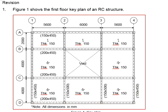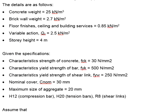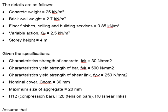Having understood the structural key plan, let us look into the details. The concrete weight is 25 kN per m³. The brick wall weight is 2.7 kN per m². The floor finishes, ceilings, and building services — which are the permanent actions — are 0.85 kN per m². Variable actions are 2.5 kN per m². The story height is 4 m. Be careful with the units given, as some are in terms of volume while some are in terms of area.